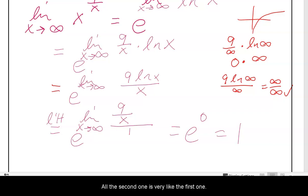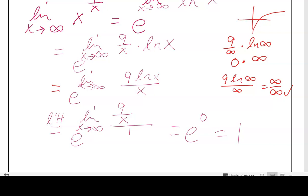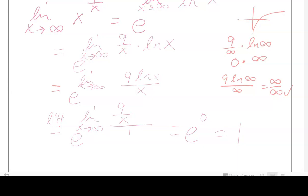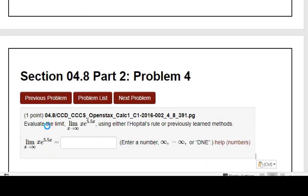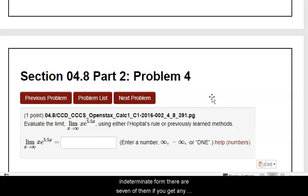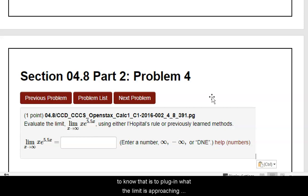The second one is very like the first one. Now looking at problem number 4, we've got this limit. This is x times e to the 5.5x. You'll know whether or not to use L'Hôpital's if you get an indeterminate form — there are seven of them. If you get any of the seven, you're going to use L'Hôpital's. The only way to know is to plug in what the limit is approaching, in this case infinity.